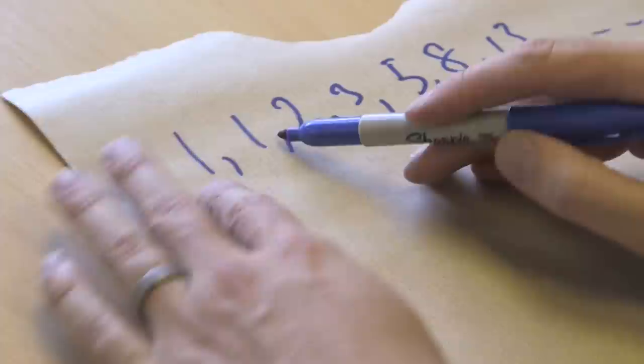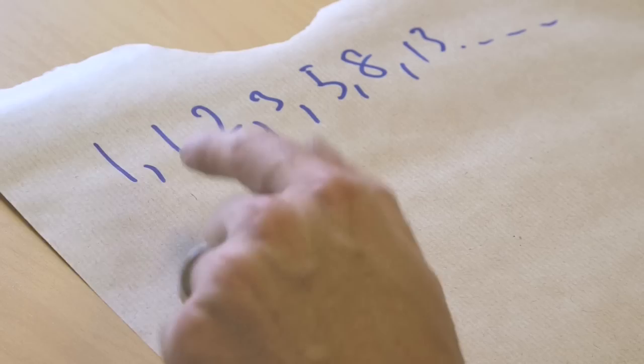What if we start, instead of starting 1, 1, what if we start 1, 2? Well, we can't start 1, 2, because we're just starting here. All we've done is move along slightly, and so we're going to get the same numbers if we start 1, 2.